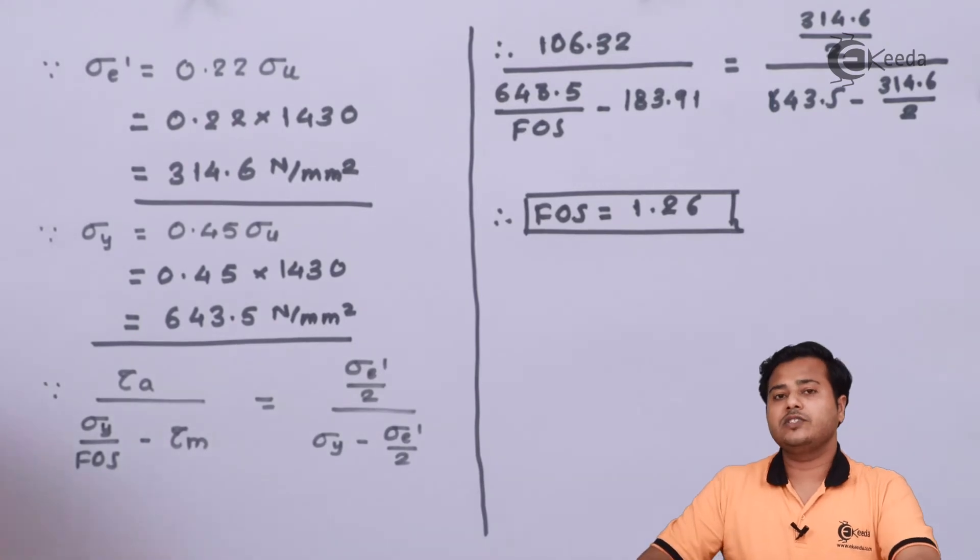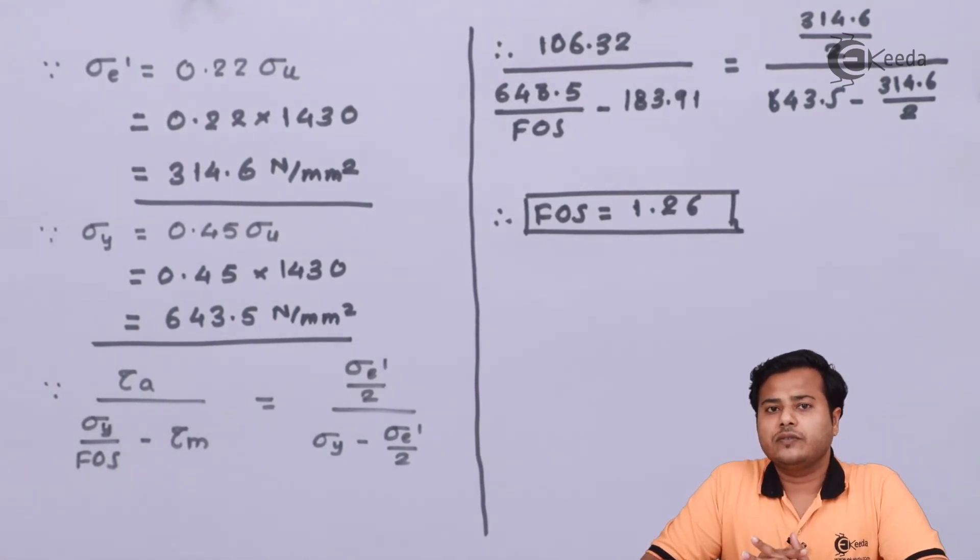So, there we conclude with this numerical where under the action of fluctuating loads, we have found out the factor of safety. In such numericals, we are supposed to find out factor of safety most prominently unless any other aspect is asked. In the next section, we are going to solve a numerical in which not only the static but also variable or fluctuating loads are going to act and there we will demonstrate how to select a material, different properties and how to find out the factor of safety considering both static as well as the fluctuating loads.